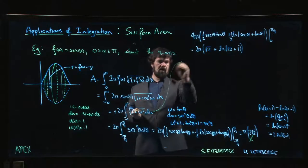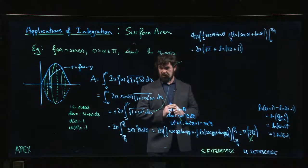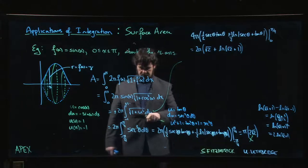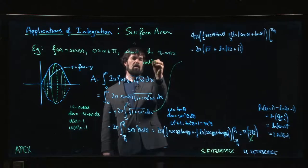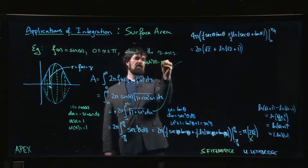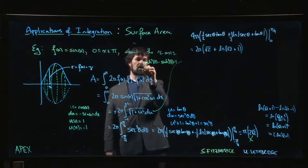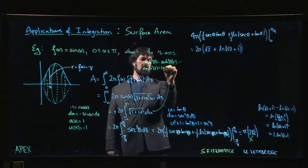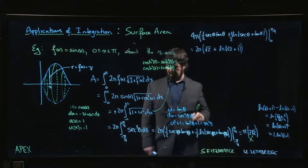Remember that you can always do a hyperbolic substitution. Recall that cos hyperbolic squared t minus sine hyperbolic squared t equals one, so hyperbolic cos squared is one plus hyperbolic sine squared.